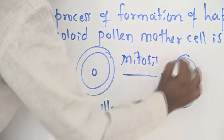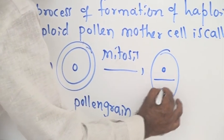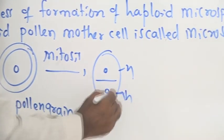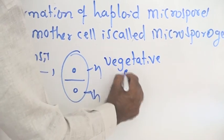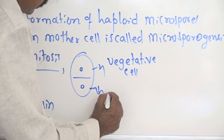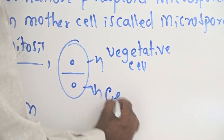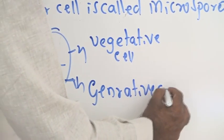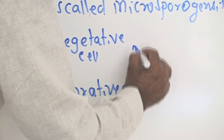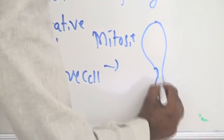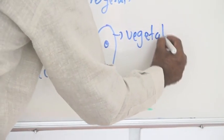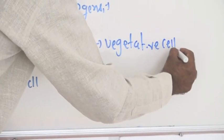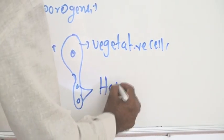During this mitosis, an asymmetric spindle fiber is formed. As a result, two haploid cells are formed: one large cell called the vegetative cell, and one small cell called the generative cell. The generative cell once again undergoes mitosis, resulting in the formation of two haploid sperms.